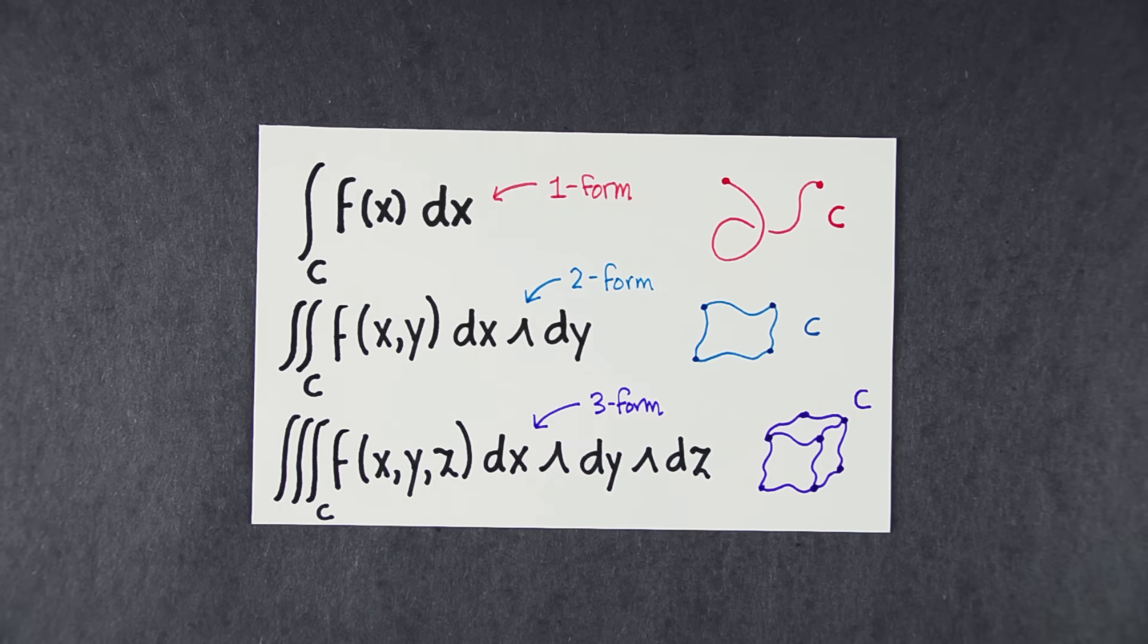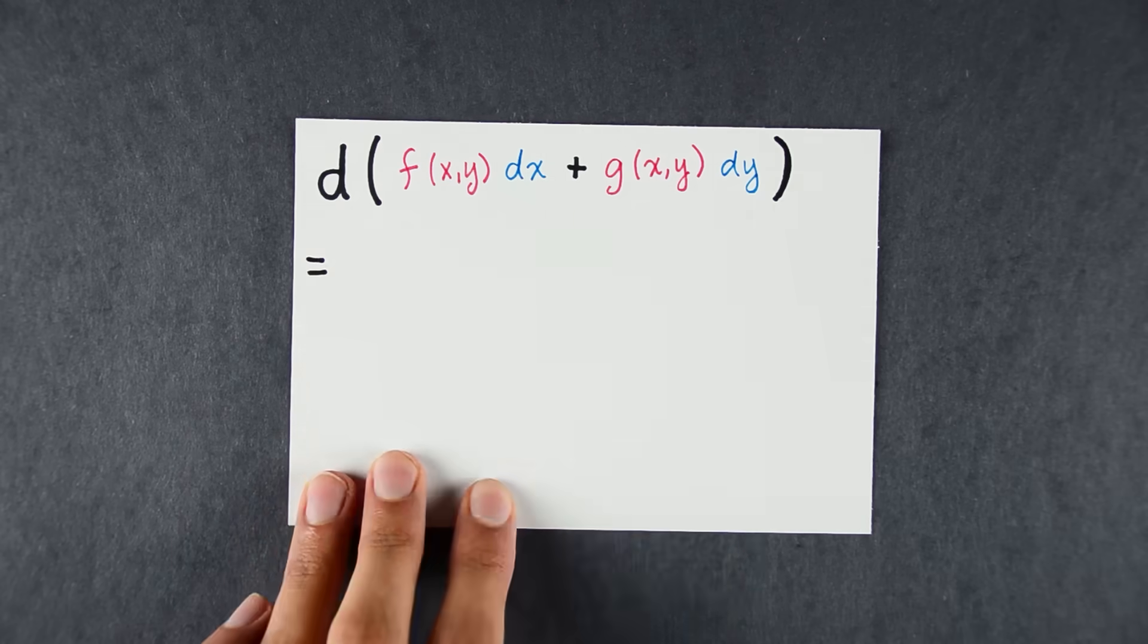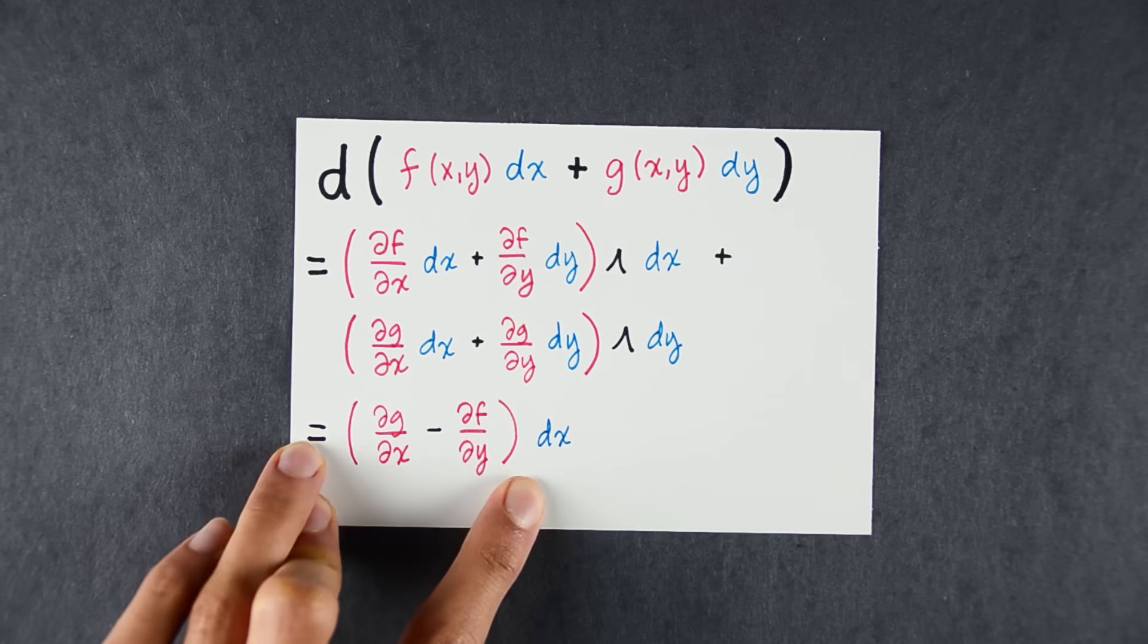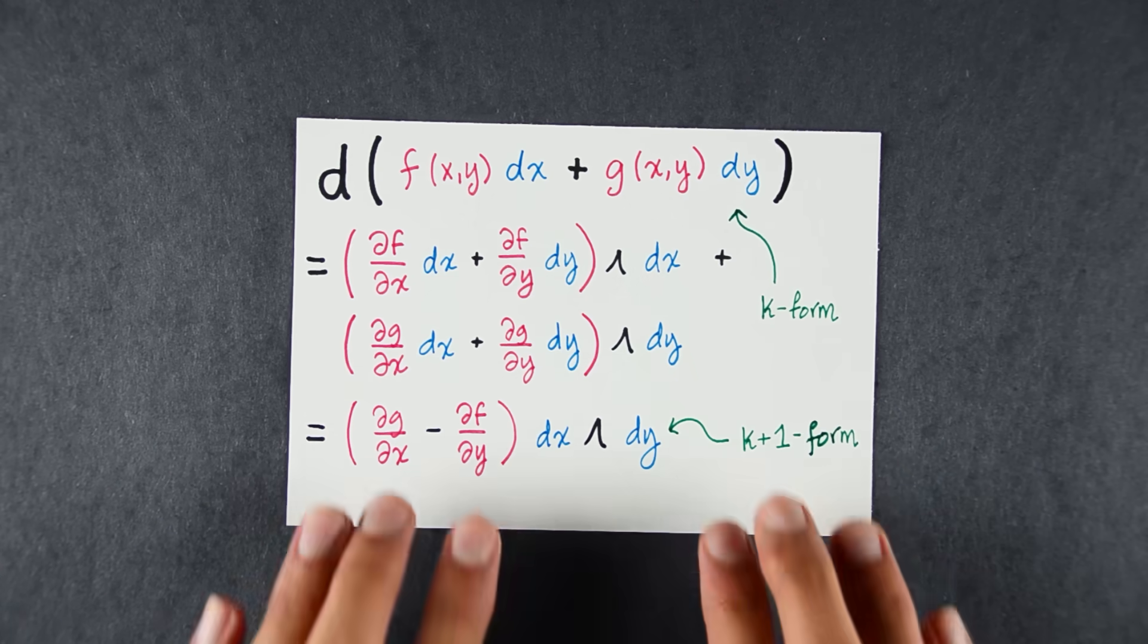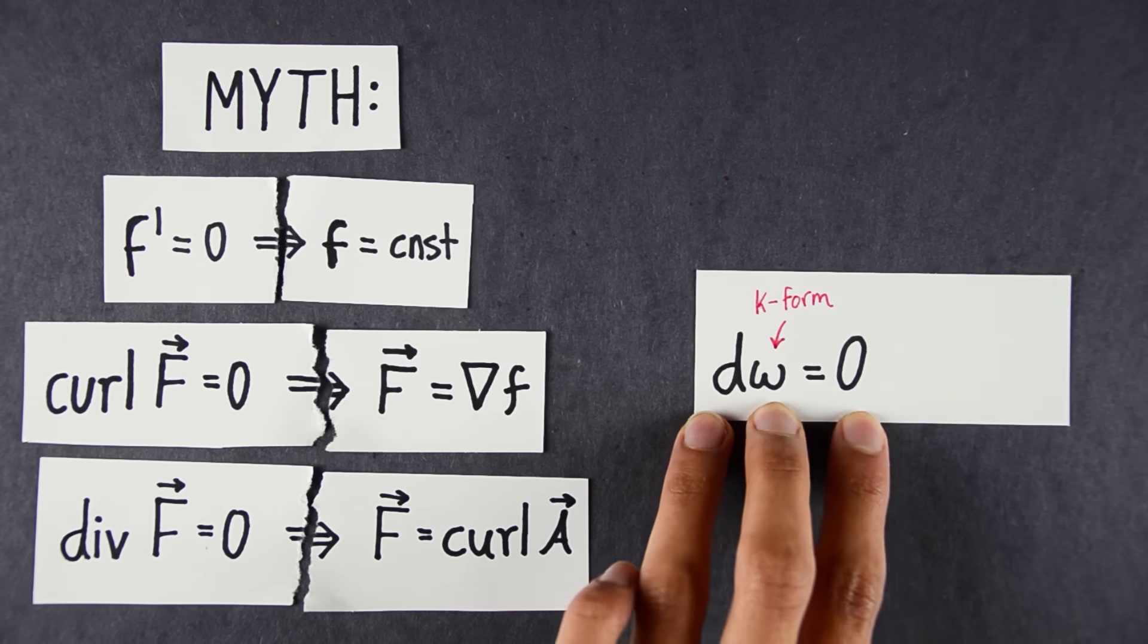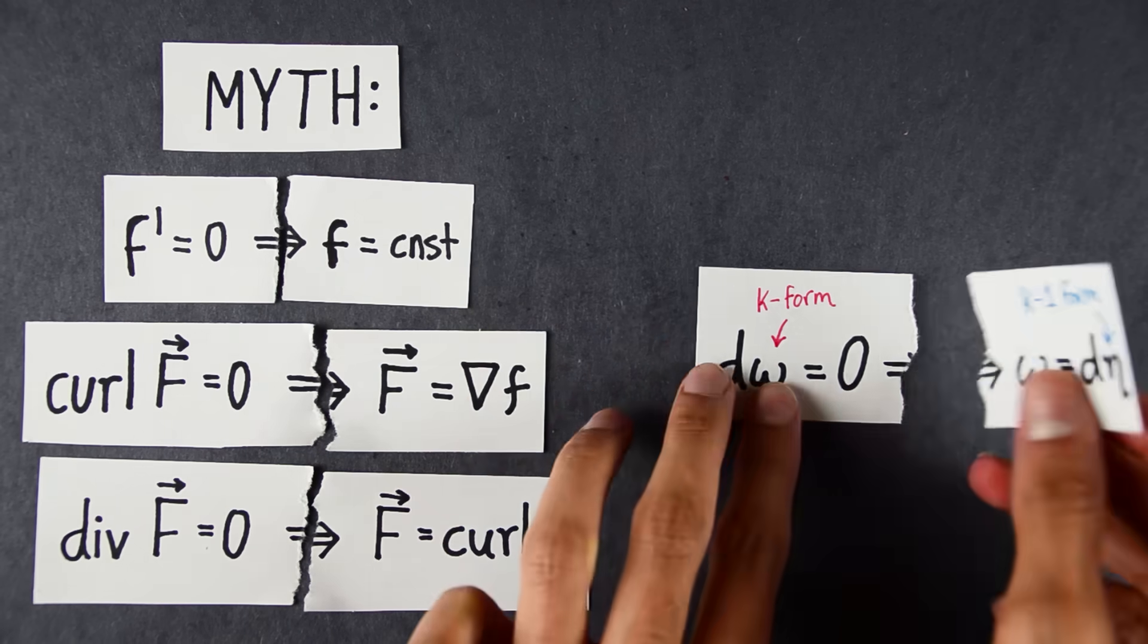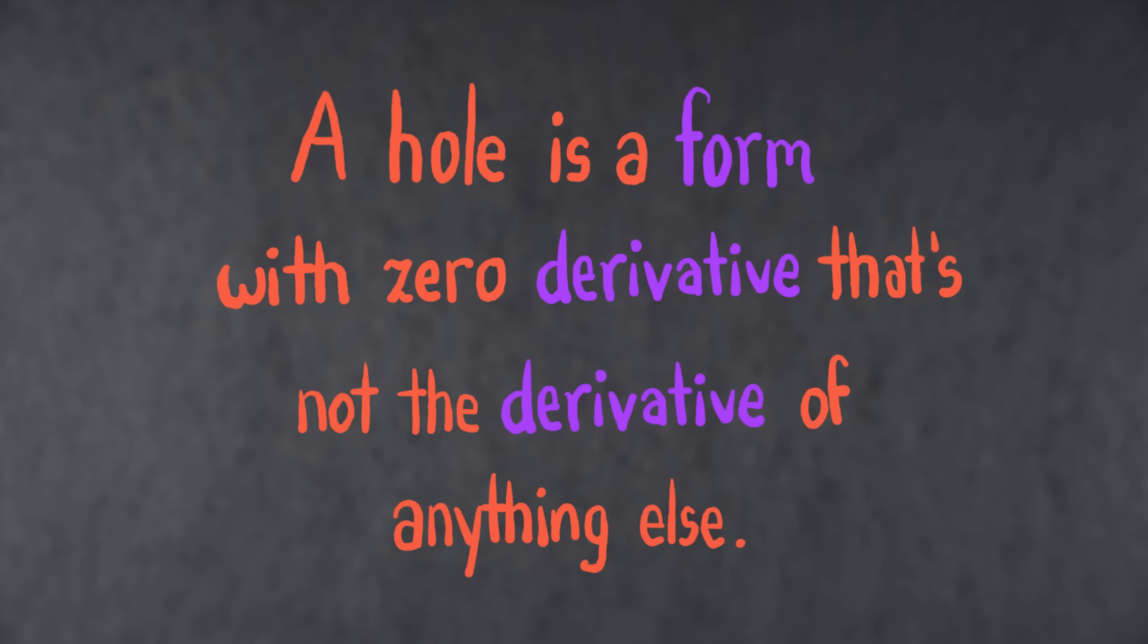To generalize gradient divergence and curl, we need a way to differentiate these forms. The exterior derivative d is defined in terms of these computational rules. The important thing to know is that the derivative of a k-form is a k+1 form. Unlike the boundary, it goes up a dimension. Here's the point. Let's propose the following test to find k-dimensional holes. If there is a differential k-form, omega, with derivative zero, that's not the derivative of some other form, eta, then we've found a k-dimensional hole. In short, a hole is a form with zero derivative that's not the derivative of anything else. Familiar?